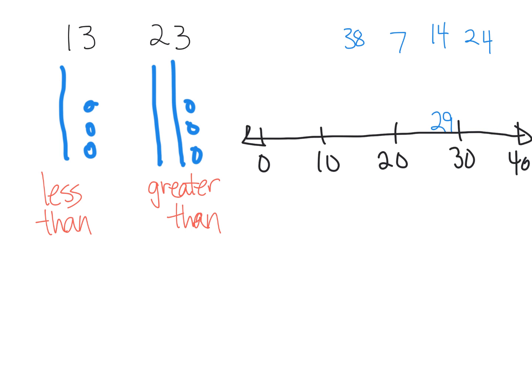Then there we go, we've labeled where we've roughly placed 29 where it goes. Now let's do the same thing with 38, and we'll understand that 38 is somewhere up here as long as they understand it's somewhere between 30 and 40.